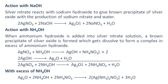Action with sodium hydroxide: silver nitrate reacts with sodium hydroxide to give a brown precipitate of silver oxide along with sodium nitrate and water. Action with ammonium hydroxide: when ammonium hydroxide is added to silver nitrate solution, a brown precipitate of silver oxide is formed, which then dissolves to form a complex in excess ammonium hydroxide.